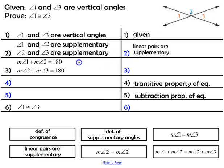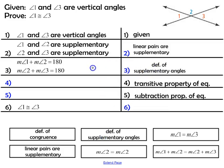Then, knowing those pairs of angles are supplementary, the measure of angle 1 plus the measure of angle 2 equals 180, and the measure of angle 2 plus the measure of angle 3 equals 180. We can write these as mathematical equations because that is the definition of supplementary angles.